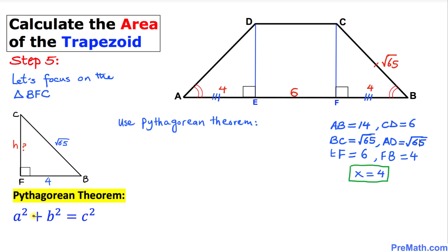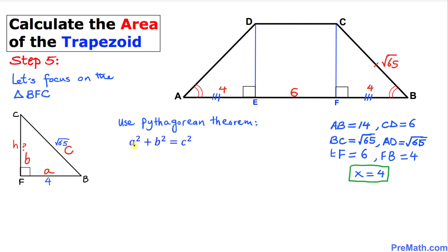Since we have a right triangle, we'll use the Pythagorean theorem: A² plus B² equals C². In our triangle, A is 4, B is H, and C is square root of 65. Filling in: 4² plus H² equals (square root of 65)², which gives 16 plus H² equals 65.